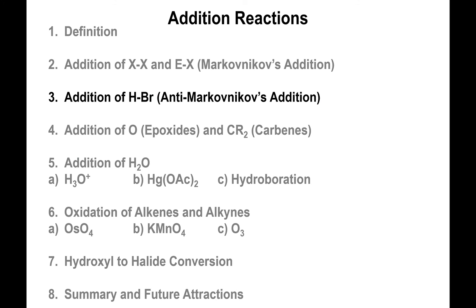In the next video, we will talk about the addition of HBr via an anti-Markovnikov configuration — meaning the least electronegative group adds to the carbon with the fewest hydrogens — and we'll see why that happens.